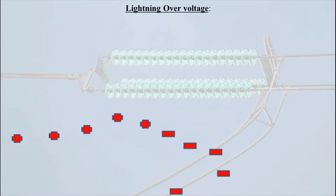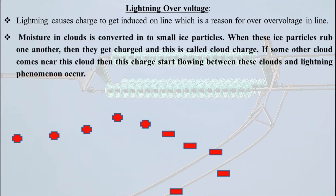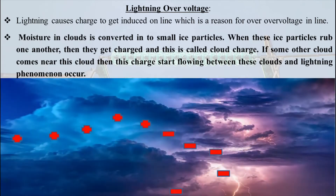You all must have seen lightning across dense dark clouds in rainy season. Have you ever wondered why this lightning phenomenon occurs? These clouds are made up of small drops of water. Due to low temperature at height, these droplets of water are converted into ice crystals. When these ice particles rub against each other, they get charged, and this charge is called cloud charge.